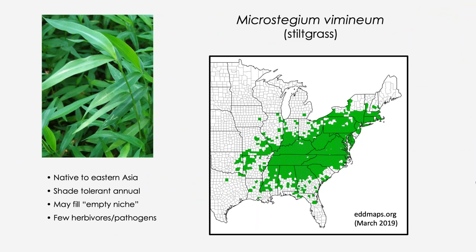The first species is Microstegium vimineum, or stiltgrass, which I've worked on for about 15 years since I was at Indiana University. This species is an annual, native to Eastern Asia, shade-tolerant but unusual in being a C4 species. People have suggested it's filling an empty niche because most understory grasses in the eastern U.S. are C3 species. Its distribution is very broad, from the Florida panhandle north to Detroit and from eastern Texas to the Atlantic seaboard.